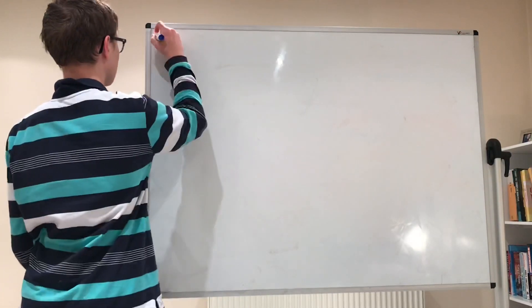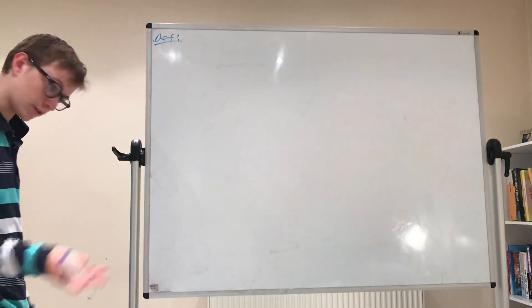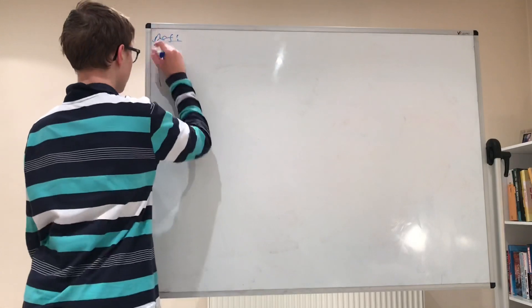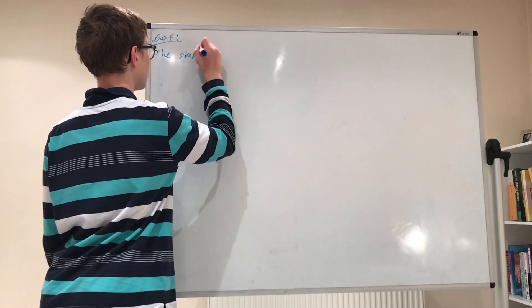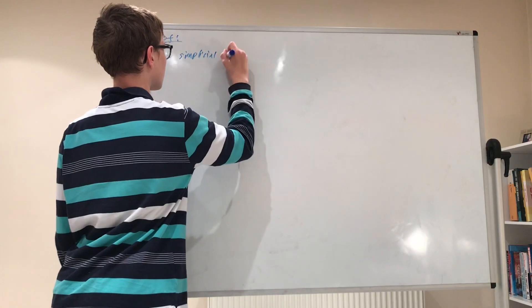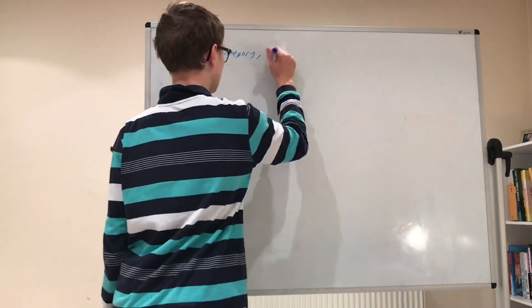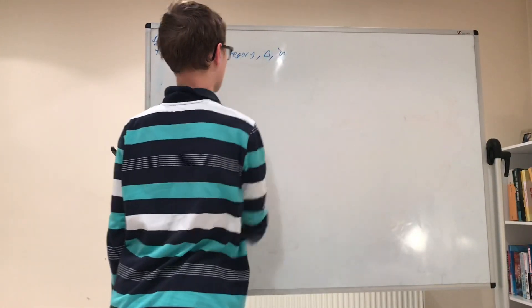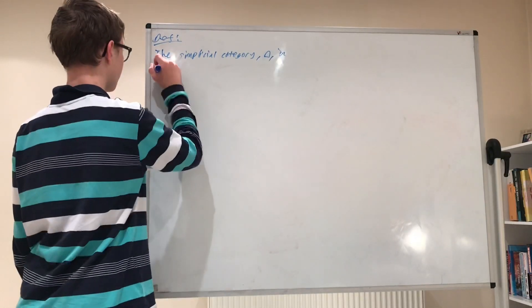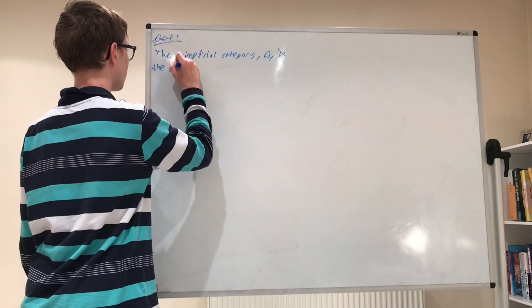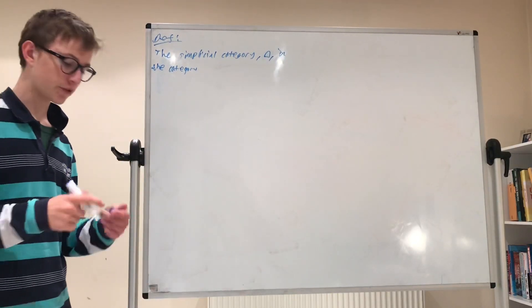Okay, so, first of all, what is the simplicial category? The simplicial category, and it's denoted delta, is the category whose objects and morphisms, so of course when you're describing a category, unlike with set theory where you just have to give it some objects, you also have to give it morphisms.